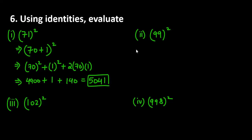This is how you can solve your answers using identities. The second part is 99 square. Either you can do 100 minus 1 or you can do 90 plus 9. If you do 100 minus 1 it will be easier to solve it.